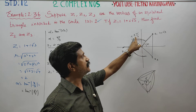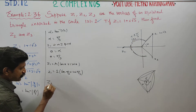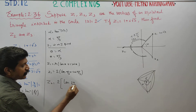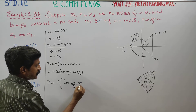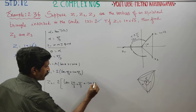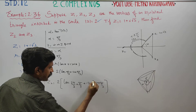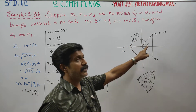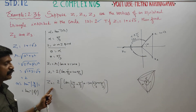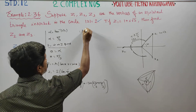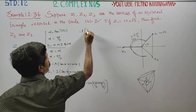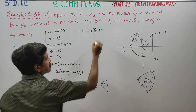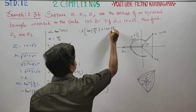Pi by 3 is 60 degrees. 60 plus 120 is 180 degrees, which is pi. So z2 equals 2 times cos pi plus i sine pi. Just add 120 degrees to the older angle: 60 plus 120 is 180 degrees — that is pi. So z2 equals 2 times cos pi plus i sine pi.